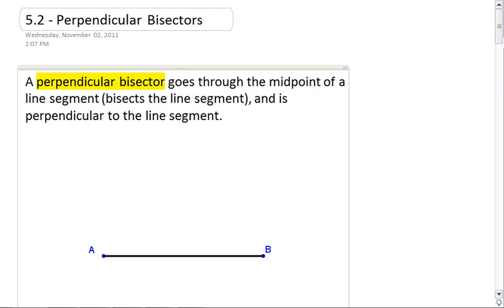Section 5.2, Perpendicular Bisectors. A perpendicular bisector is a segment or a line that goes through the midpoint of a line segment, which effectively bisects the line segment, and is perpendicular to the line segment.